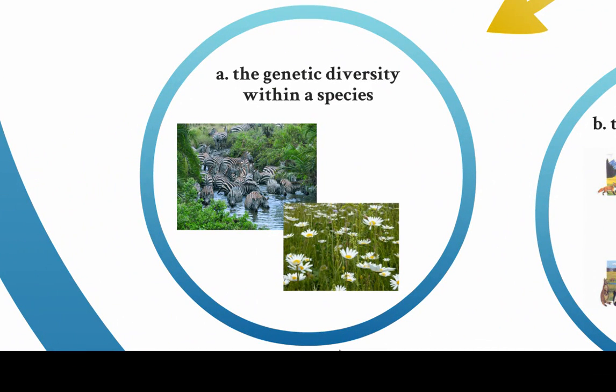So here we have a population of zebras, a population of daisies, and even though to the human eye they all look almost identical, there is diversity within that group. An aspect of biodiversity is maintaining diversity within species because we're going to find out that's important for the survival of a species.